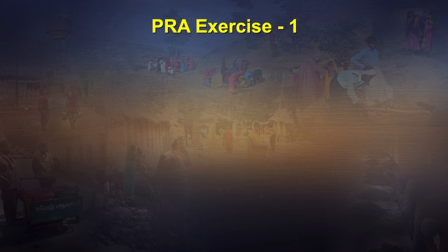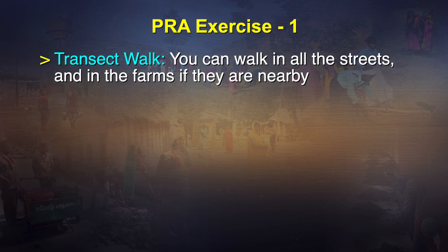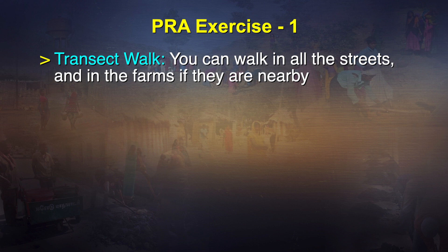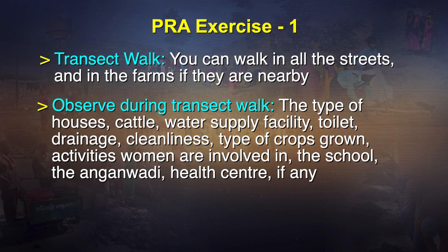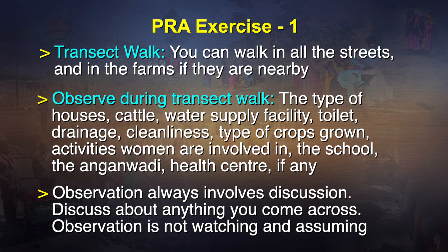PRA exercise one I would suggest is the transect walk. Transect walk means you walk through all the streets and farms if they are nearby and observe. This gives you a general understanding of the village — its topography, settlements, and house types. It is an observational walk: you get to know the type of houses, cattle, water supply, toilets, drainage, cleanliness, types of crops grown, activities women are involved in, the school, and the Anganwadi health center. Bear in mind: observation always involves discussion. Observation is not watching and assuming.